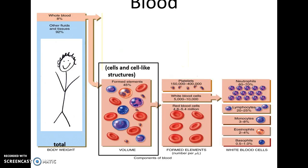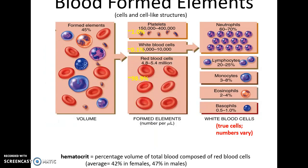The formed elements are cells and cell-like structures. They include erythrocytes, or red blood cells, which make up the vast majority, and also white blood cells or leukocytes, and platelets or thrombocytes. Approximately 98.9% of the formed elements are red blood cells, while 0.1% are the white blood cells or leukocytes.